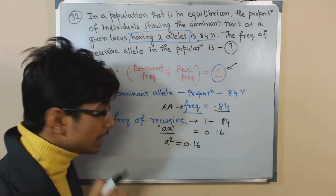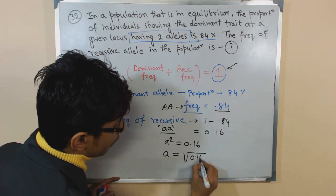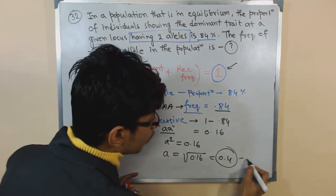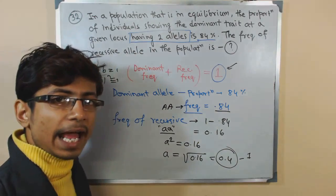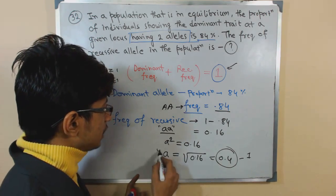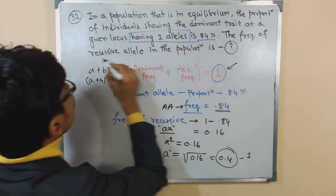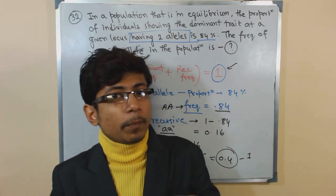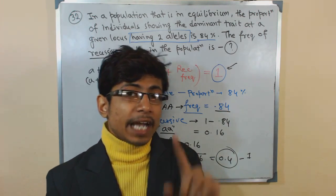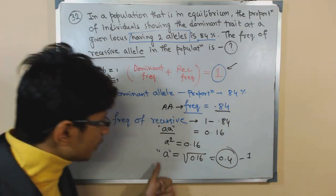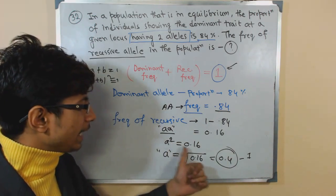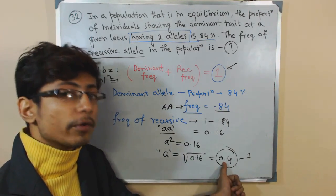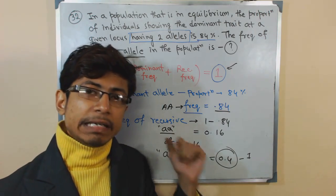If a² = 0.16, then the frequency of a single recessive allele is the square root of 0.16, which equals 0.4. The question asks for the frequency of the recessive allele — not both alleles being recessive at the locus, but one single recessive allele. That's why we take the square root. The frequency of the recessive allele in that population is 0.4.